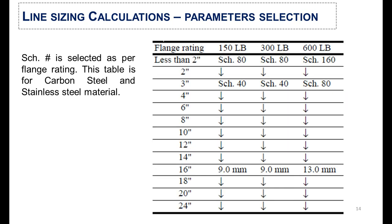The schedule number is selected based on the flange rating. This table shows the flange rating and schedule number for stainless steel and carbon steel materials. For example, if the flange rating is 150 pound and the line size is less than 2 inches, the schedule number will be 80. Similarly, for flange ratings of 300 pound and 600 pound, the schedule number is found according to the line size.